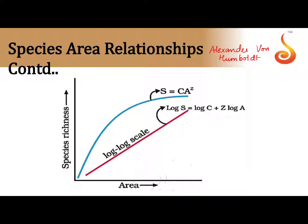What did he say? He said that as area increases, species diversity also increases, but only to a limit. Why do we speak about this limitation?